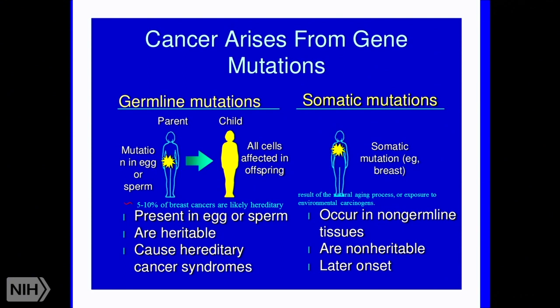Cancer arises from gene mutations. There are two types: germline mutations, present in the egg or sperm, cause hereditary cancer syndromes and pass from parent to child — accounting for five to ten percent of breast cancers. Somatic mutations occur in non-germline tissues, are non-inheritable, and result from the natural aging process or exposure to environmental carcinogens.